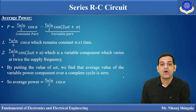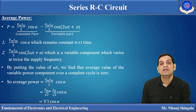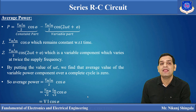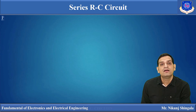We can write VmIm/2 as (Vm/√2) × (Im/√2) × cos φ. Since Vm/√2 is the RMS voltage VRMS and Im/√2 is the RMS current IRMS, the average power becomes P = VRMS × IRMS × cos φ, or simply P = VI cos φ. This is the actual power consumed in the series RC circuit.